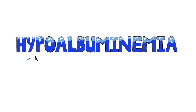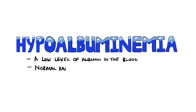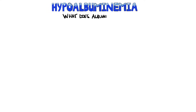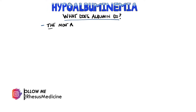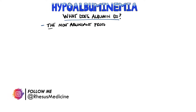Hypoalbuminemia is defined as a low level of albumin in the blood, and the normal range is around 3.5 to 5.5 grams per deciliter. Albumin itself is the most abundant protein in human blood, making up around half of all serum protein.